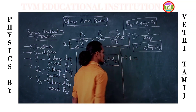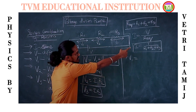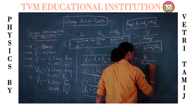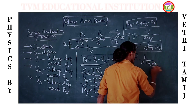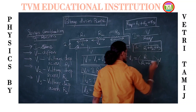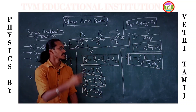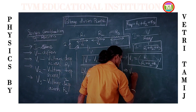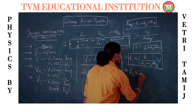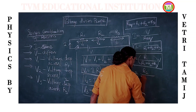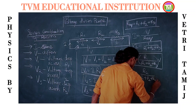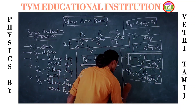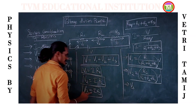Which implies V1 is current times R1, giving R1 divided by (R1 plus R2 plus R3), whole bracket times V. V2 is current times R2, giving R2 divided by (R1 plus R2 plus R3), whole bracket times V. Similarly, V3 is current times R3.